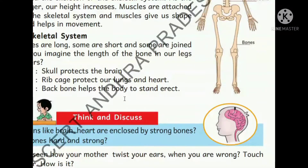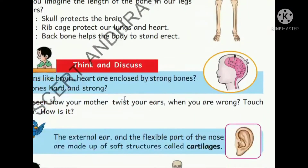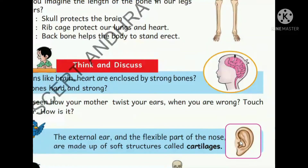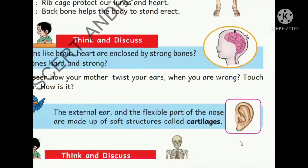The skull protects the brain, the rib cage protects the heart, and the backbone - the spinal cord - helps the body to stand erect. That is about bones. Now let us see cartilage. Cartilage is in the external ear. It is a smooth bone.